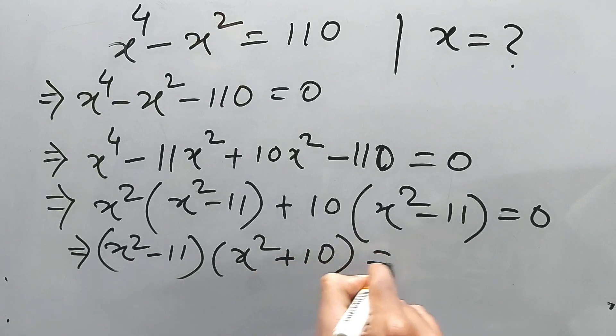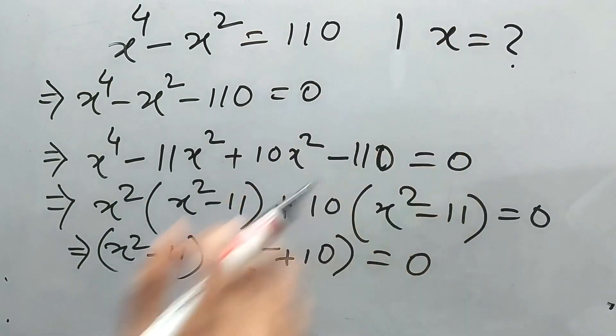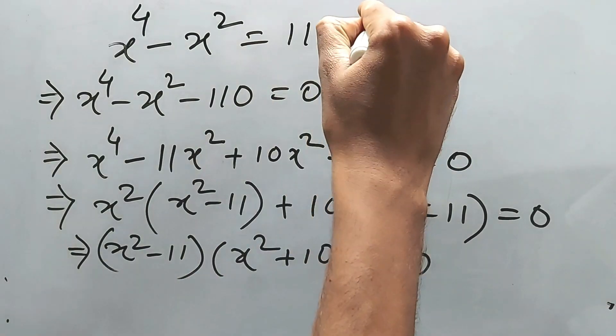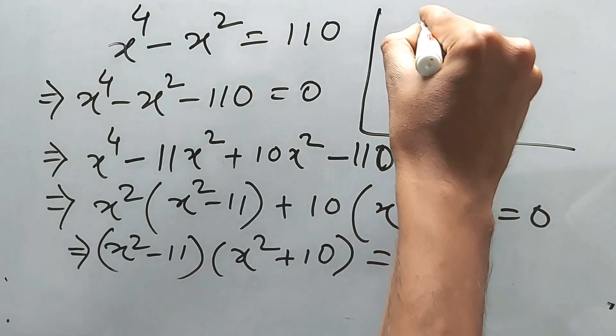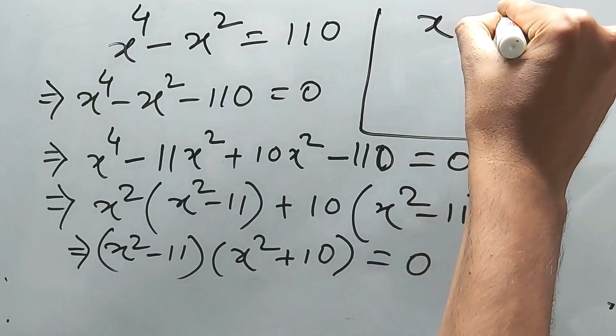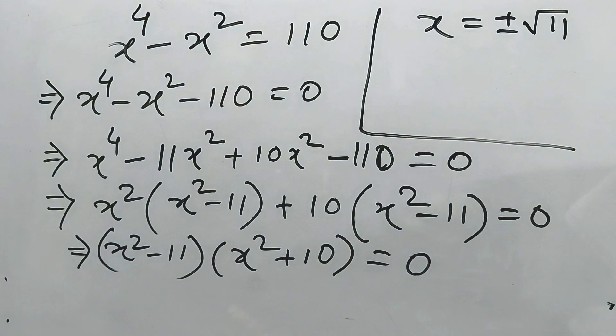Simple. Now what is the final answer? X squared is equal to 11 and x squared is equal to minus 10. But these are the values of x squared, right? And what is the value of x? Okay, now let's do it here. If x squared is equal to 11, then x is equal to plus minus square root of 11.